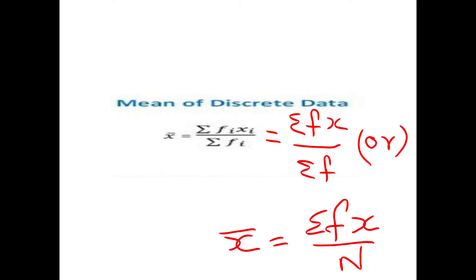The formula for mean of discrete data is: x̄ = Σfx / Σf, or equivalently x̄ = Σfx / N, where N is the summation of f — that is, Σf is nothing but capital N.